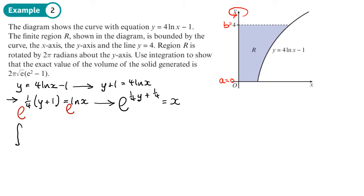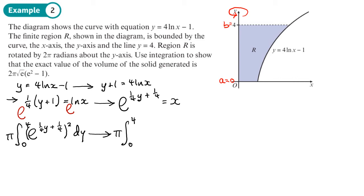Our integral is π times, with limits 4 and 0, and then I've got e to the power (y/4 + 1/4), and that all needs to be squared dy. Now, squaring this function in the brackets basically means multiplying the powers by 2. So now it becomes e to the power (y/2 + 1/2) dy.